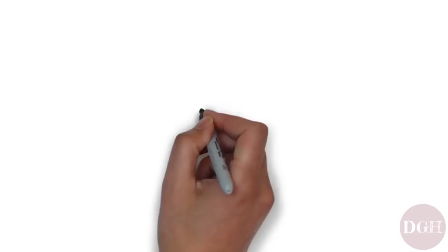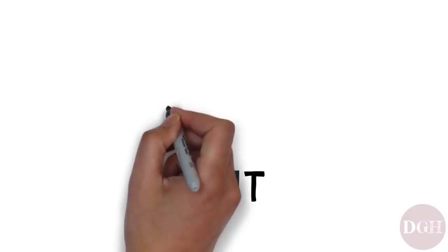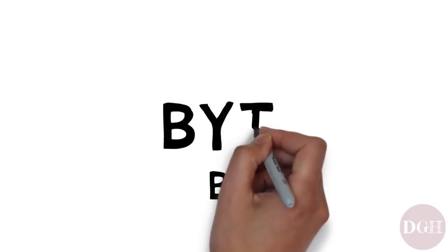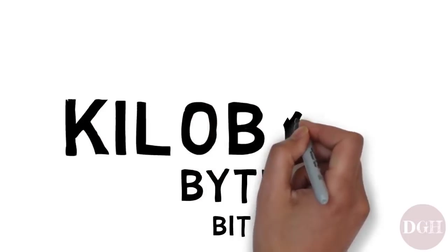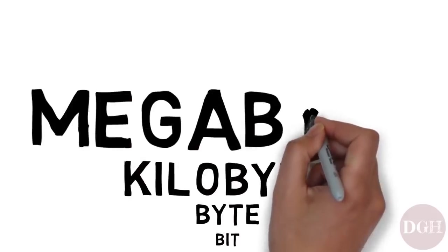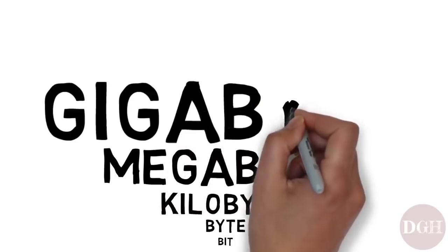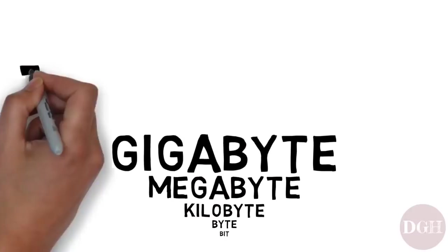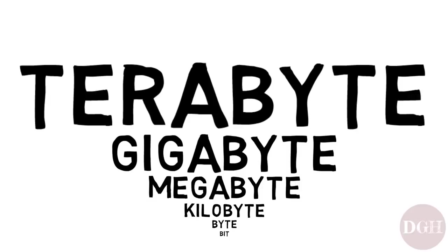To recap: we talked about bits, how there are eight bits in one byte, how there are a thousand bytes in one kilobyte, and a thousand kilobytes in one megabyte, and a thousand megabytes in one gigabyte, and a thousand gigabytes in one terabyte. I hope you've enjoyed this video and that you have a better understanding of digital storage terminology.